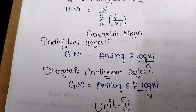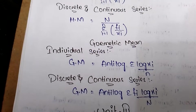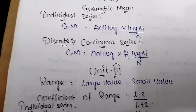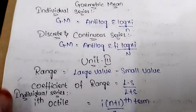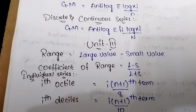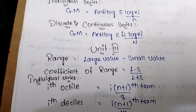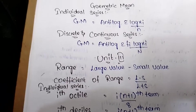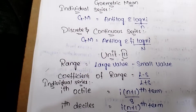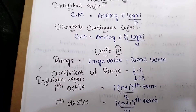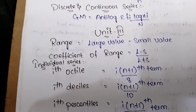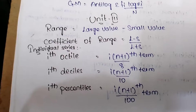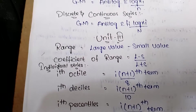Unit 3 — Range: Range = Largest value − Smallest value. Coefficient of range = (L − S) / (L + S), where L is the largest value and S is the smallest value.